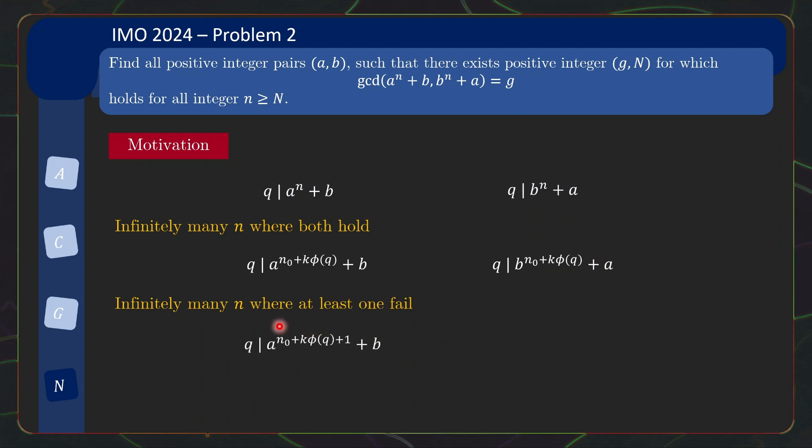And if you want to then construct values of n where at least one divisibility fails, it's quite natural to look at the next increment in the power. So if you just increase the power by 1, chances are it will fail because you are multiplying this thing by a, which seems to be coprime with q. So this will likely cause this to fail. So let's see what happens if it doesn't fail.